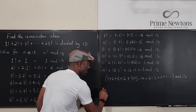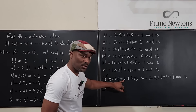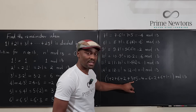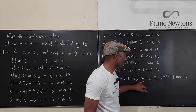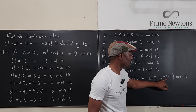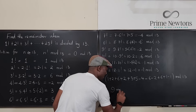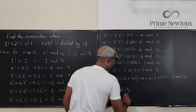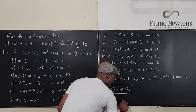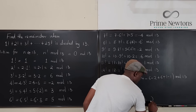Now let's add up all the values. Summing the residues of 1! through 12! mod 13 and adding the zeros from 13! through 25!: after carefully summing, the result is 9 mod 13. Therefore, the remainder when 1! + 2! + ... + 25! is divided by 13 is 9.